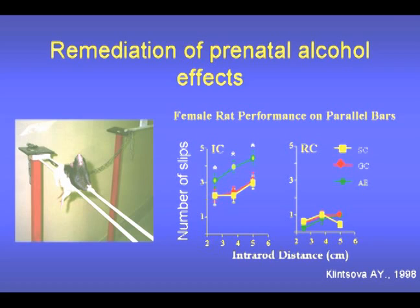Subjects in the inactive condition, labeled as IC, did not receive motor training. Subjects in the motor control group, labeled as MC, were exercised on a runway, and subjects in the rehabilitative condition, labeled as RC, were trained on a complex motor skill task for 20 days. Ethanol-exposed subjects, labeled as AE, that did not receive motor training were impaired on this task, slipping with greater frequency compared to controls, labeled as GC and SC. In contrast, complex motor training significantly improved motor performance in all groups on this task, including the performance of ethanol-treated subjects. In fact, there was no difference in performance among the ethanol-exposed and control groups following this rehabilitative conditioning.